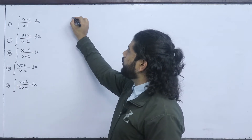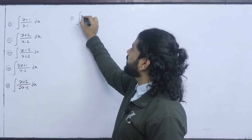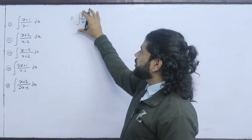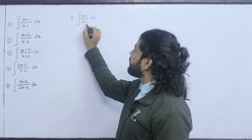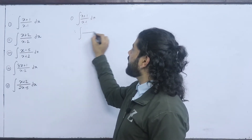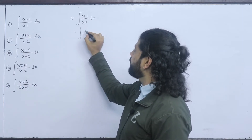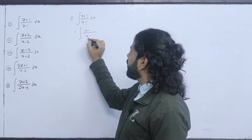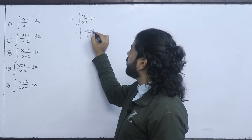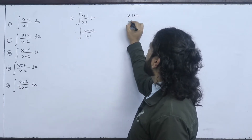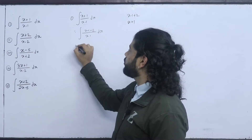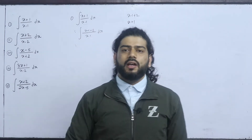We will solve the first question. The expression is integral of (x+1) over (x-1). What is the denominator part? The numerator is (x+1) and the denominator is (x-1). We note that x+1 equals (x-1) + 2, so the numerator can be rewritten in terms of the denominator.